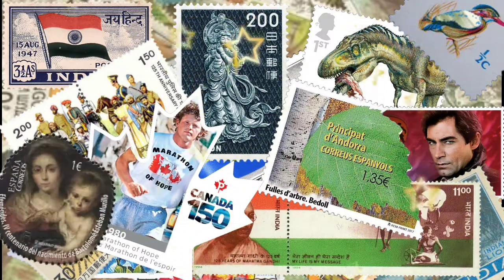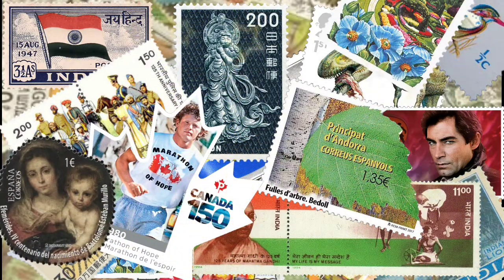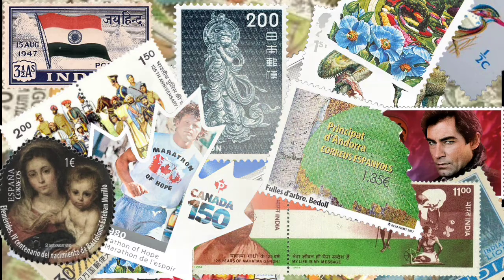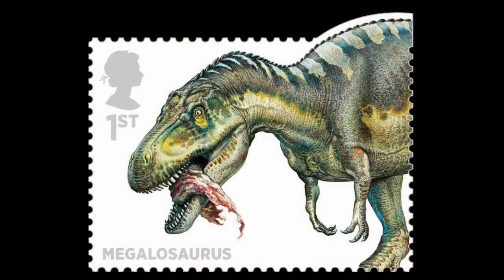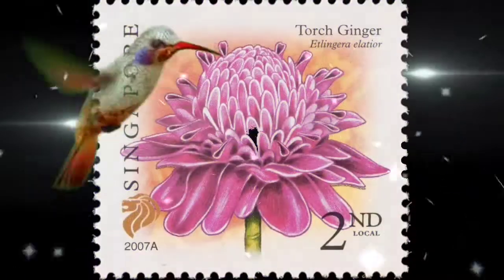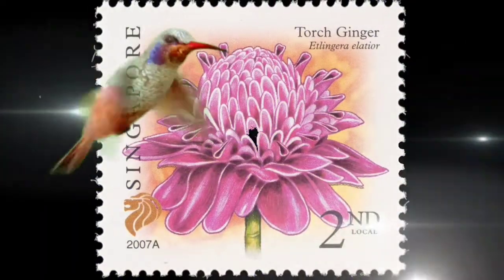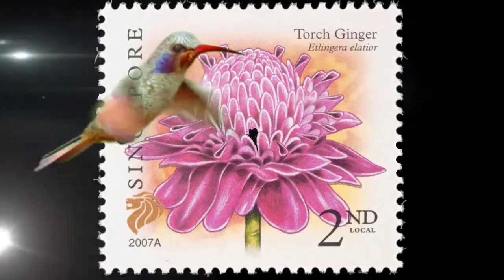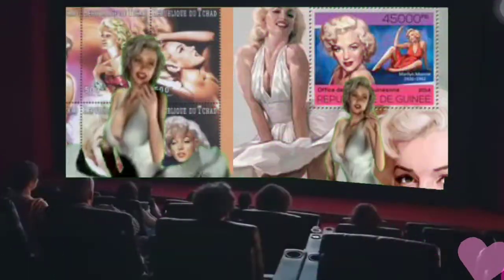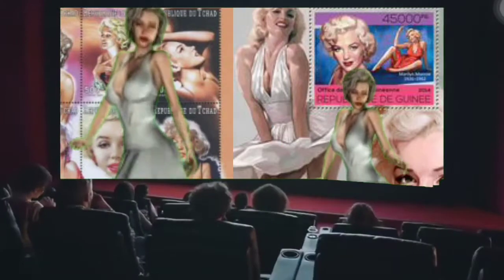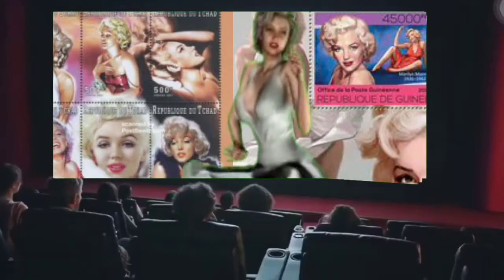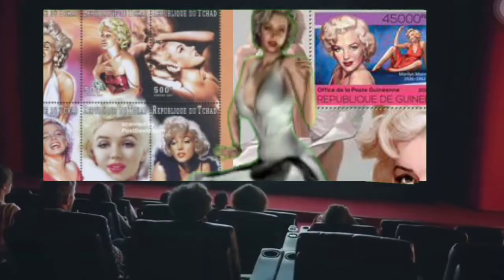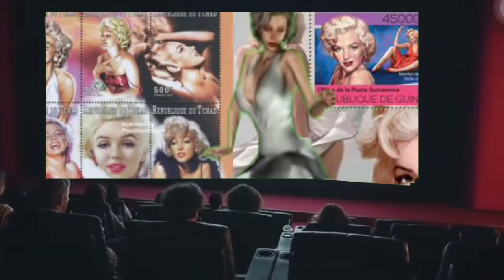Topical stamp collecting is the collecting of postage stamps relating to a particular subject or concept. Topics can be almost anything — from dinosaurs, birds, space, and cinema, to famous physicians and scientists, along with historical people and events on stamps, which is often a standard theme for many stamp-issuing countries.